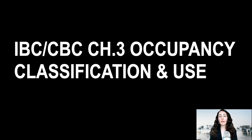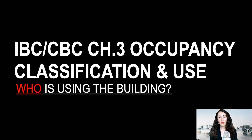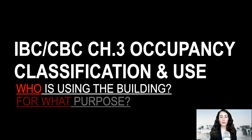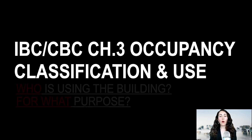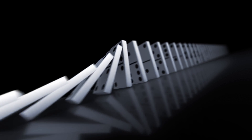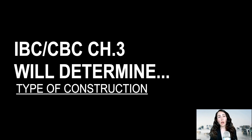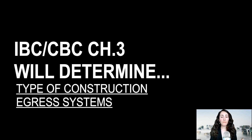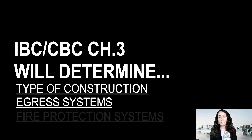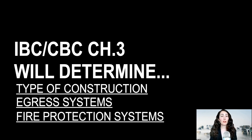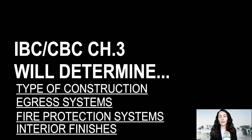To identify the occupancy of your building, you're going to ask yourself questions such as: who is using the building and for what purpose? This will determine all the other aspects of the building type, including the construction, the occupant safety, the fire protection systems that you're going to need, the interior finishes, and even more.